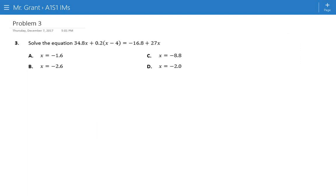This is solving equations. Our first step is almost always looking for distributive property, which is usually shown with parentheses. I'm going to take this 0.2 and distribute it in. We get 34.8x + 0.2x - 0.8 = -16.8 + 27x.